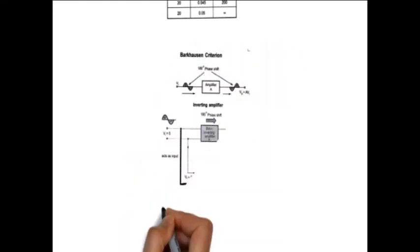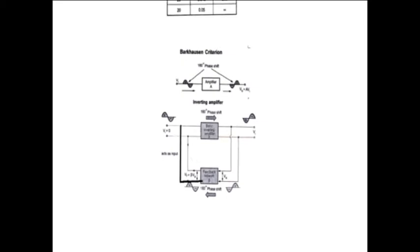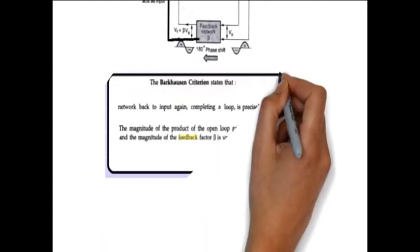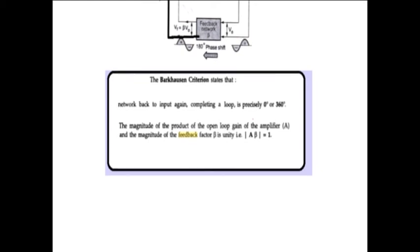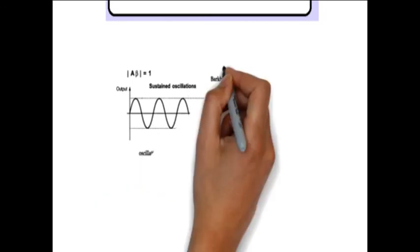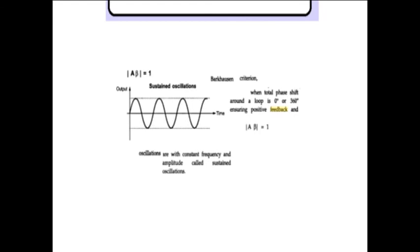This is the Barkhausen criteria, which tells us about positive feedback. The input signal is amplified with a phase reversal of 180 degrees, the beta network again gives a phase reversal of 180 degrees, so the total becomes 360 degrees and the signal becomes in phase. The Barkhausen criteria demands the magnitude of A beta should be 1 and there should be positive feedback — only these two points. If the magnitude of A beta equals 1, the feedback gain becomes infinity and there is a positive feedback — it becomes an oscillator.